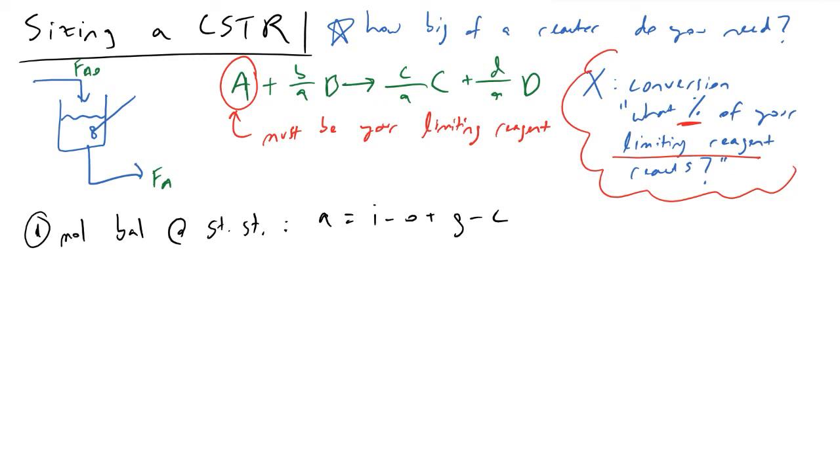As we know with CSTRs, we have some kind of flow rate into our reactor, and we're going to assume that it's well mixed and we're going to have an exit stream containing products and unreacted reactants. In this example, I'm going to be having some generic chemical reaction in which A will collide with some molecule B to form a product C and product D.